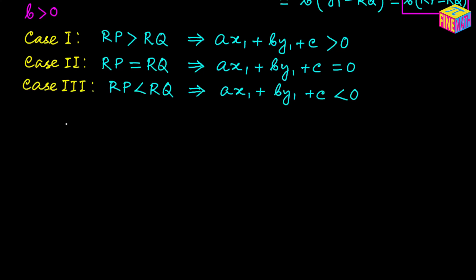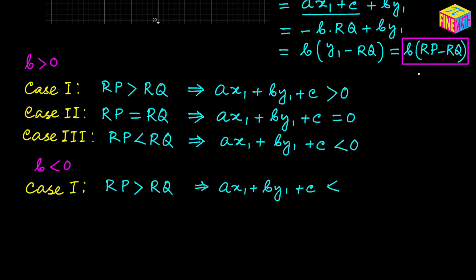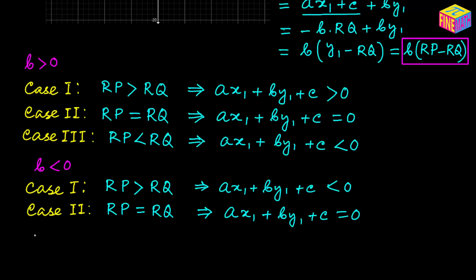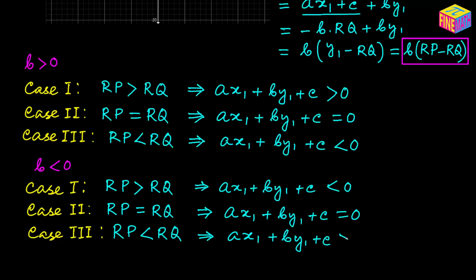We see similar behavior when b is a negative number. Case 1: if RP is greater than RQ, the quantity in parentheses is positive but b is negative, so the expression is less than zero. Case 2: if RP equals RQ, the expression equals zero. Case 3: if RP is less than RQ, the quantity in parentheses is negative and b is also negative, so their product is greater than zero.